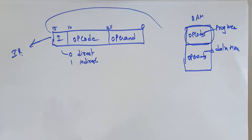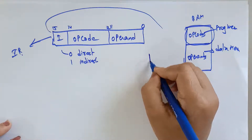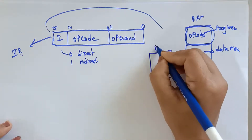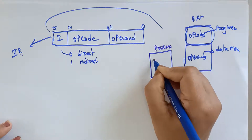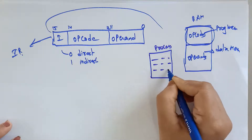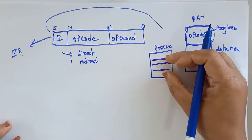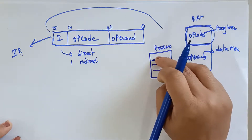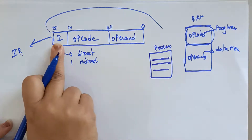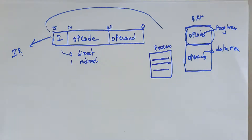Each instruction in the process is stored in the instruction register in this format — opcode, operand, and the i-bit — so that the processor can get the data and execute the instruction. This is the concept of the instruction register.